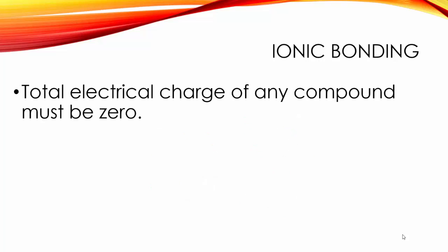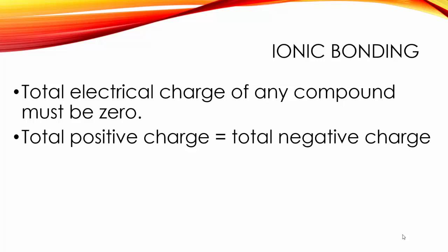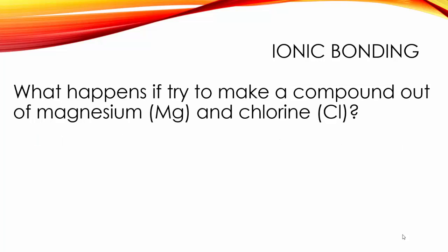Now the total electrical charge for any compound must be zero. This is true whether it's ionic or covalent. But for ionic compounds the total positive charge present must equal the total negative charge. Let's take a look at magnesium and chlorine.